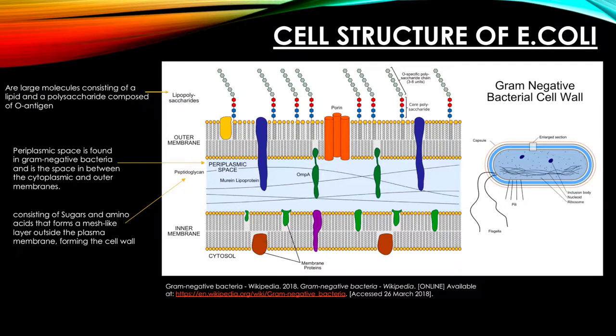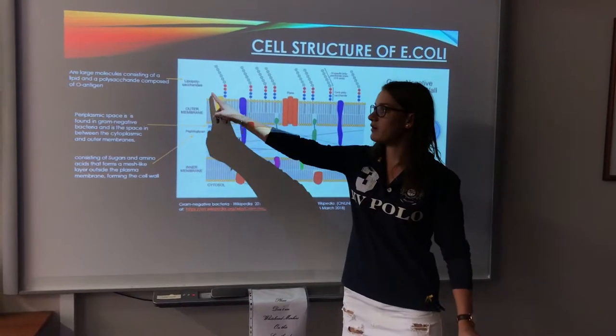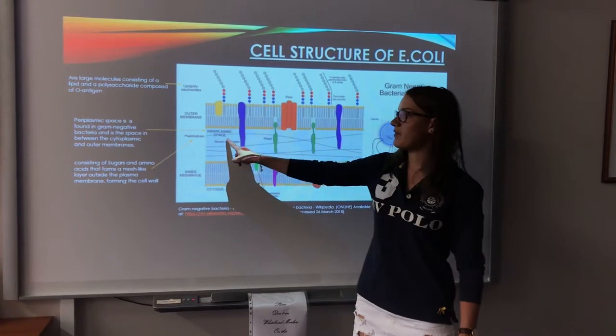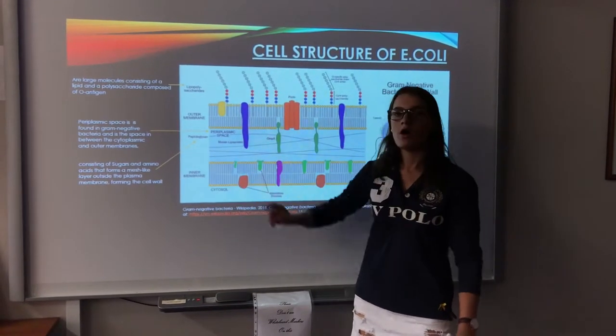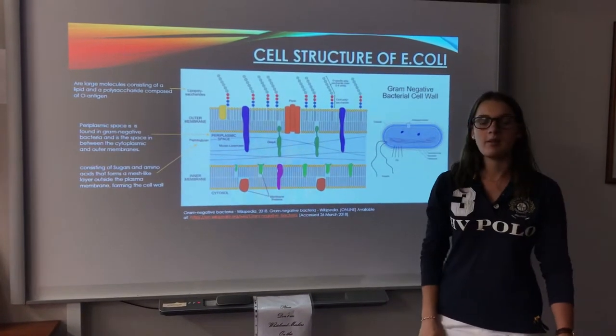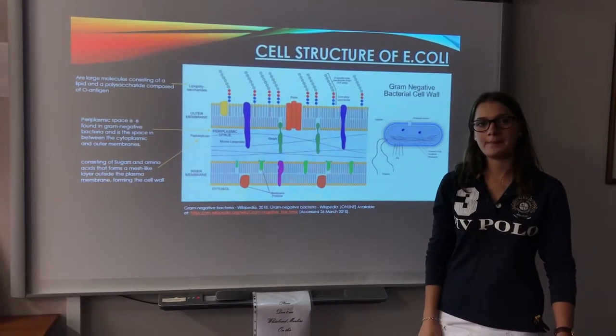The one-cell organism contains a cell wall of an outer membrane, which contains liposaccharides, a pyroplasmic space, and a peptological layer of an inner cytoplasmic membrane.